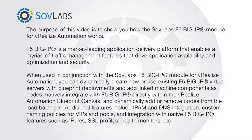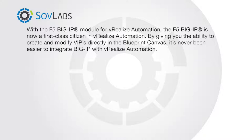You can also dynamically add or remove nodes from the load balancer. Additional features include IPAM and DNS integration, custom naming policies for VIPs and pools, and integration with native F5 Big IP features such as iRules, SSL profiles, health monitors, and the like. With the F5 Big IP Module for vRealize Automation, the F5 Big IP is now a first-class citizen in vRealize Automation.